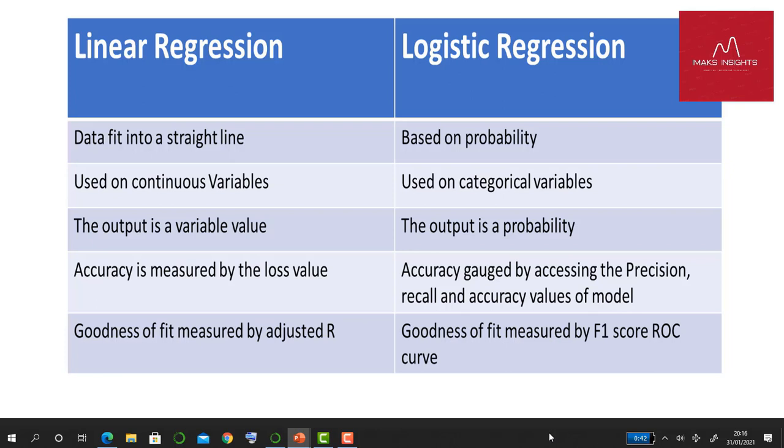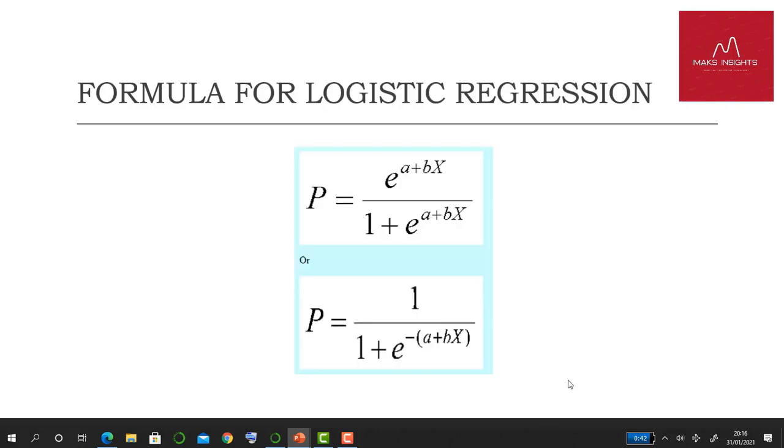This is the formula of logistic regression. The probability is equal to e raised to a plus bx over 1 plus e raised to a plus bx. Or you can put it in simpler terms: logistic regression is 1 over 1 plus e raised to negative a plus bx. That is the generalized equation for logistic regression.